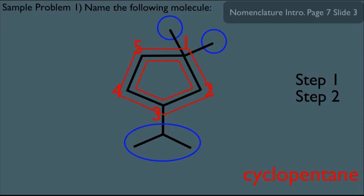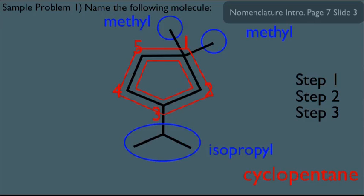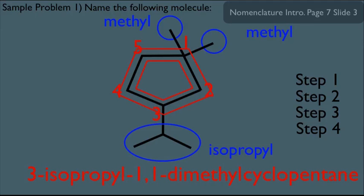Now for step three, labeling substituents: we have two methyls here and an isopropyl group here. For the last step, putting it all into the name — I in isopropyl comes before M, so we list it first. This would be 3-isopropyl-1,1-dimethylcyclopentane.